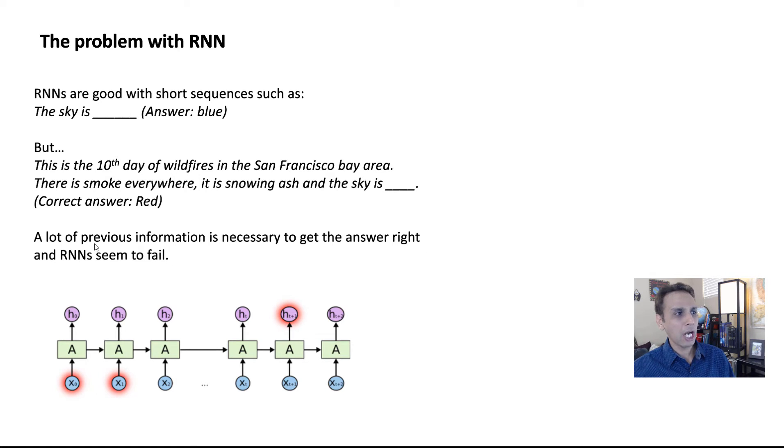How does an LSTM know this? How does an RNN know this? It doesn't remember this much. It looks at 'and the sky is' and then it's trying to fill this with blue. This is a limitation. The quick answer is a lot of previous information is necessary to get the answer right. And RNNs, they fail. Theoretically, they should be able to do it, but apparently they fail. This information is here about wildfires and the sky is information prediction is right here and it's getting it wrong.